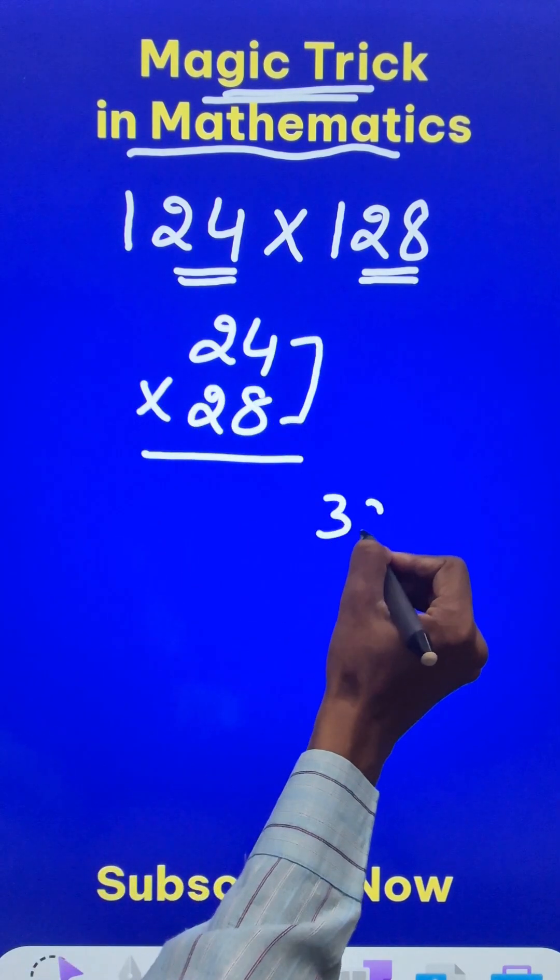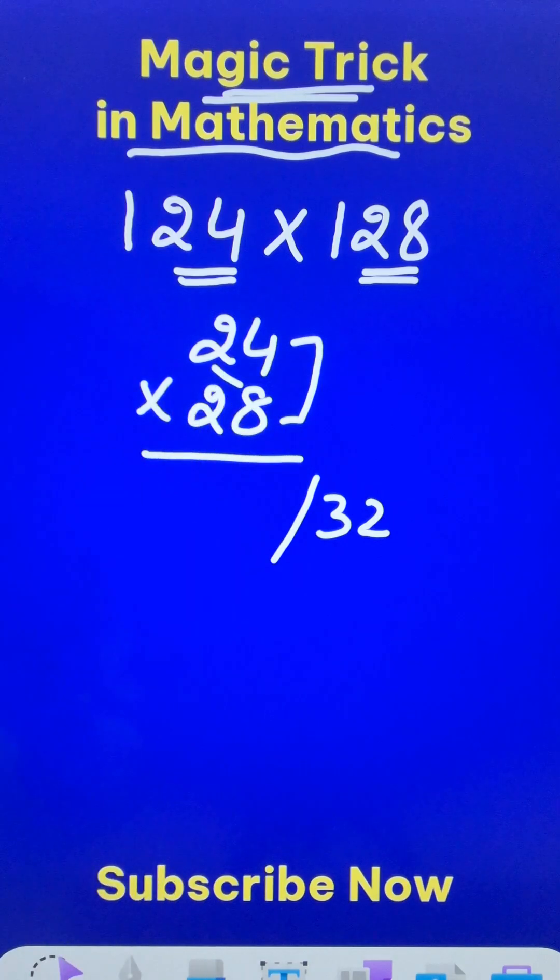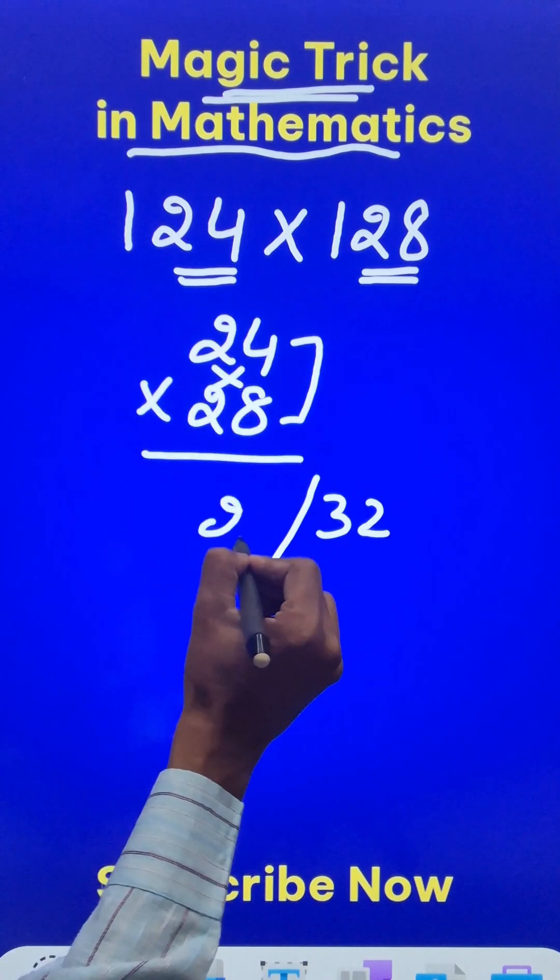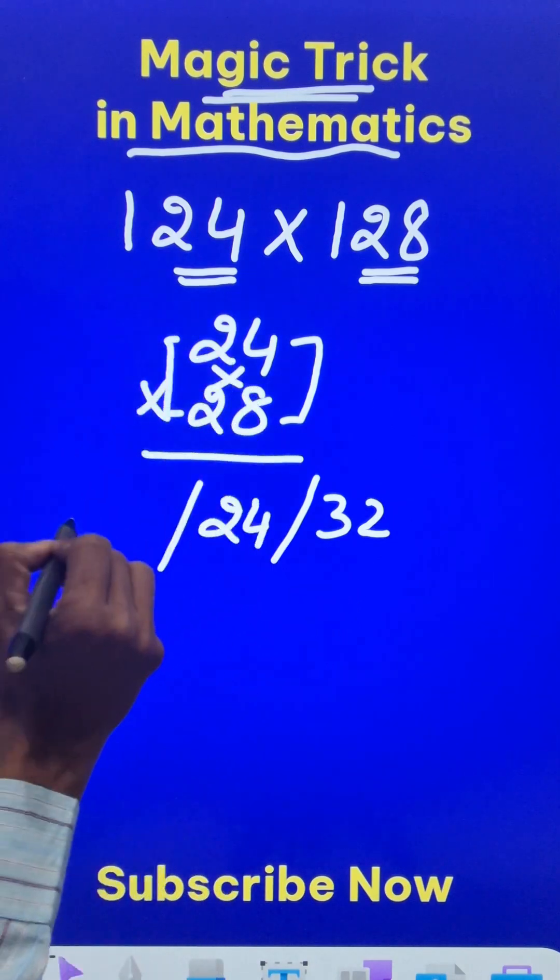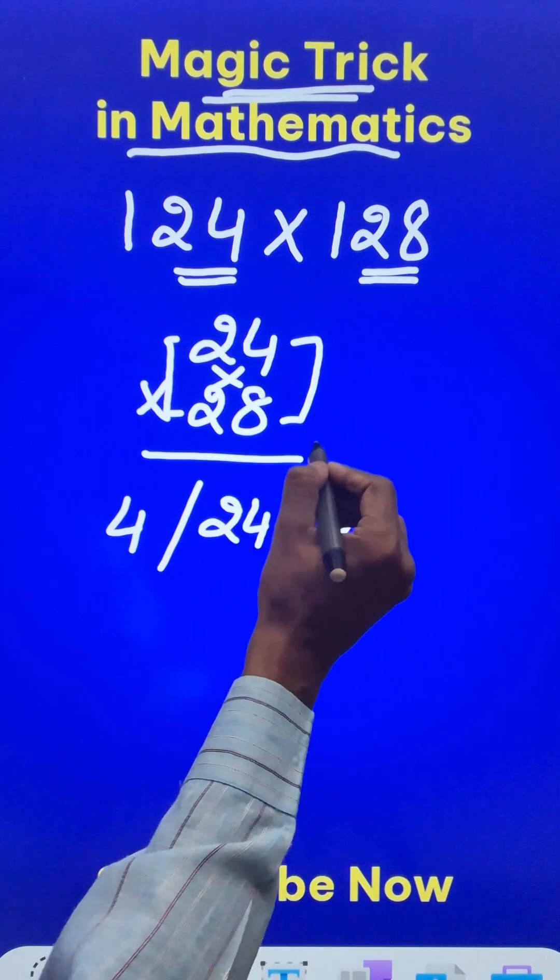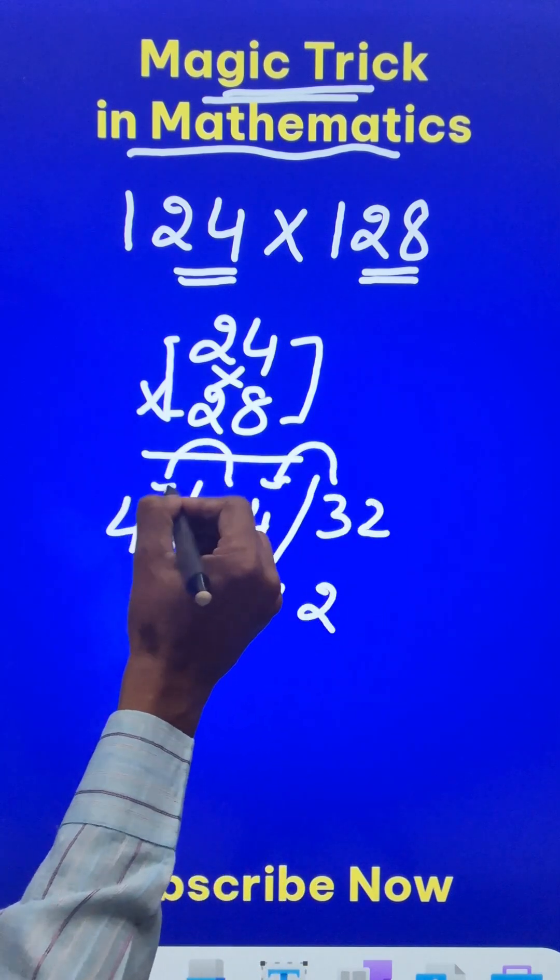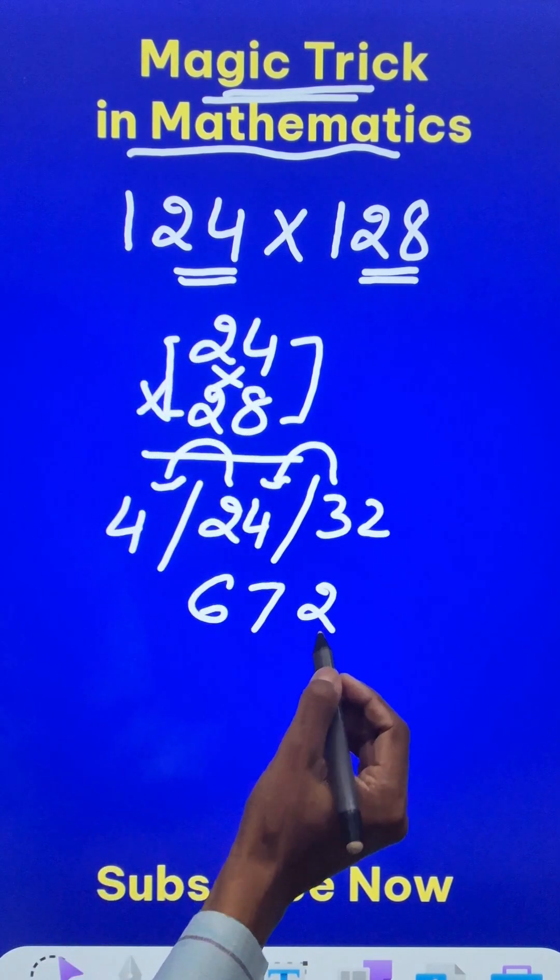So 8 4s are 32 and then this is 16 and 8, 24. So I will write a 24 here and then 2 2s are 4. So 2, 3 carried, so 27, 7, 2 carried and 6. So the product of these two numbers is 672.